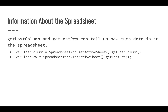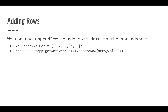We can also get the last column and last row to tell us how much data is in the spreadsheet. SpreadsheetApp.getActiveSheet().getLastColumn() gives you the last column in the current sheet, and similarly getLastRow() gives you the last row — as a number — so you can identify everything up to the end of the columns and rows. You can also add rows using appendRow(), passing in an array of values to put an additional row of data into the spreadsheet.